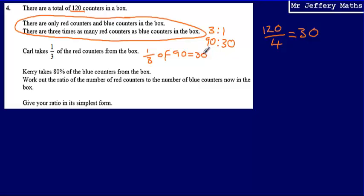So if he's taking 30 out, that means there are 60 red counters left in the box.